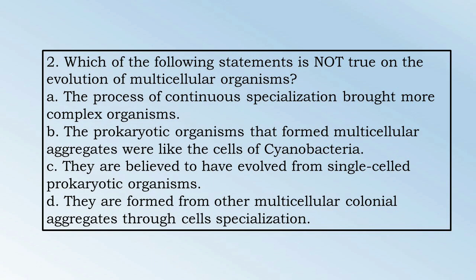Number 2. Which of the following statements is not true on the evolution of multicellular organisms? A. The process of continuous specialization brought more complex organisms. B. The prokaryotic organisms that formed multicellular aggregates were like the cells of cyanobacteria. C. They are believed to have evolved from single-celled prokaryotic organisms. Or D. They are formed from other multicellular or colonial aggregates through cell specialization.